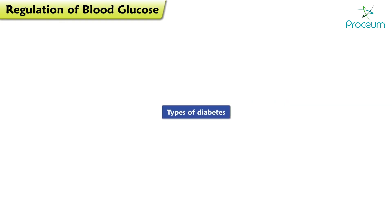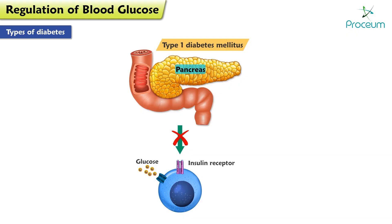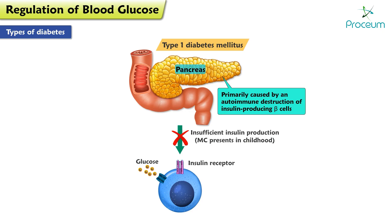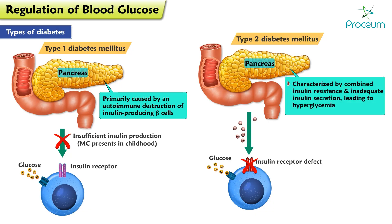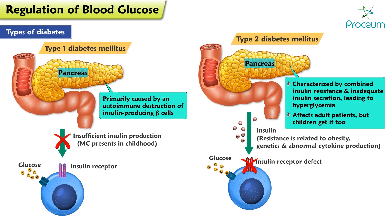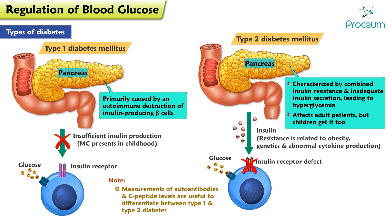Now we'll talk about the types of diabetes. Type 1 diabetes mellitus is characterized by insufficient insulin production and most commonly presents in childhood. It is primarily caused by an autoimmune destruction of the insulin-producing beta cells of the pancreas. Type 2 diabetes is a common metabolic disease characterized by combined insulin resistance and inadequate insulin secretion, leading to hyperglycemia. Type 2 diabetes typically affects adult patients, but children get it too. Insulin resistance is related to obesity, genetics, and abnormal cytokine production. Measurements of autoantibodies and C-peptide levels are useful to differentiate between type 1 and type 2 diabetes.